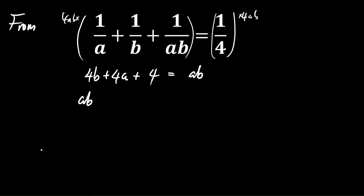So this means that ab - 4a - 4b - 4 = 0. Now we add 20 to both sides. The left-hand side will become ab - 4a - 4b + 16.